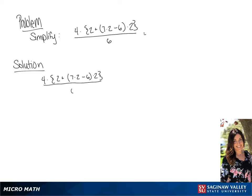We'll multiply the 7 and 2 first, and then subtract the 6. So in our parentheses we're going to have 8.